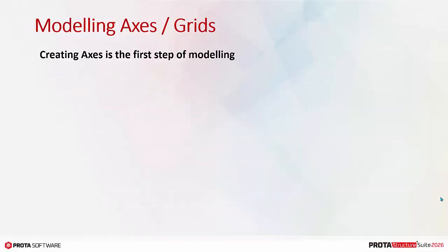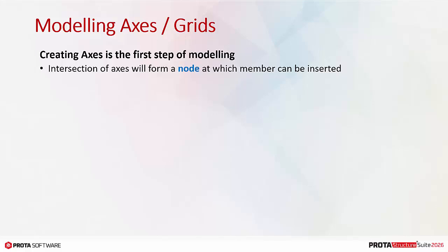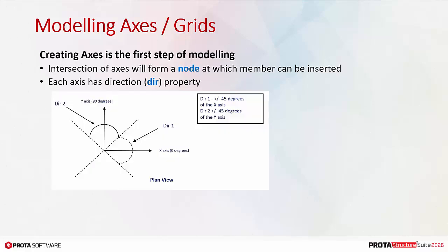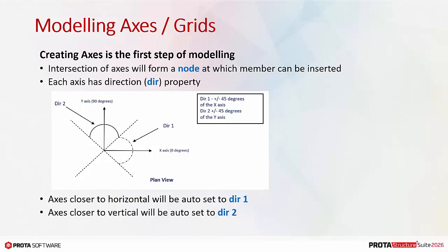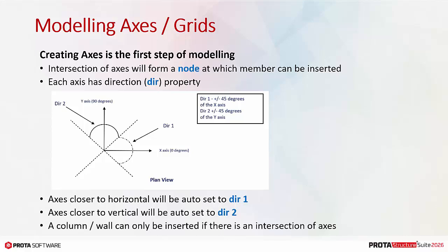Creating axes is the first step of modeling. The intersection of axes will form an anchor joint at which a member can be inserted. Each axis has a direction (DIR) property. Axes closer to horizontal will be auto-set to direction 1, while axes closer to vertical will be auto-set to direction 2. A columnar wall can only be inserted if there is an intersection of axes.